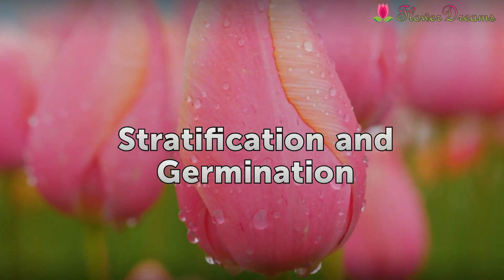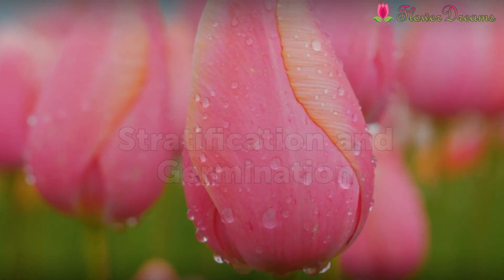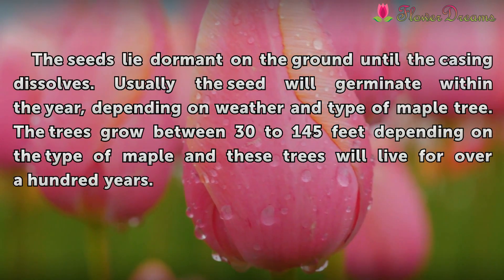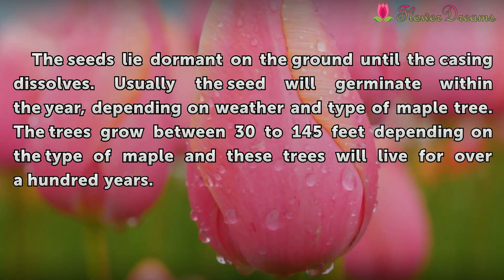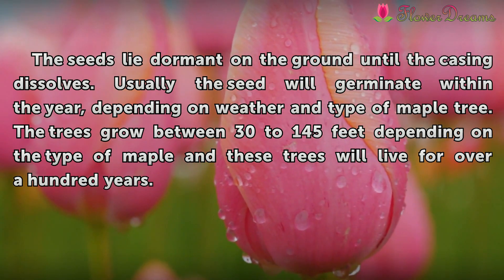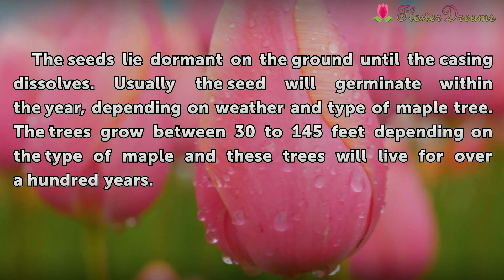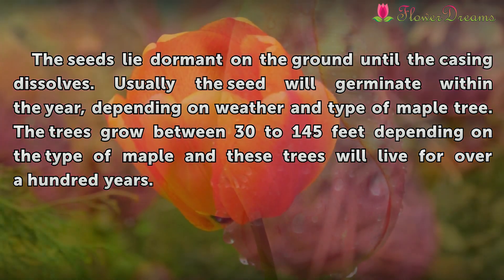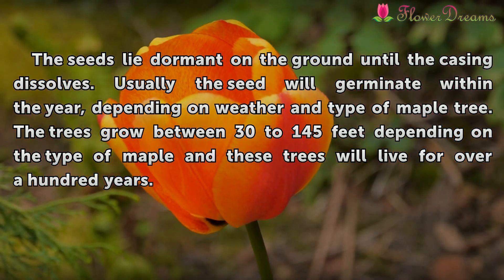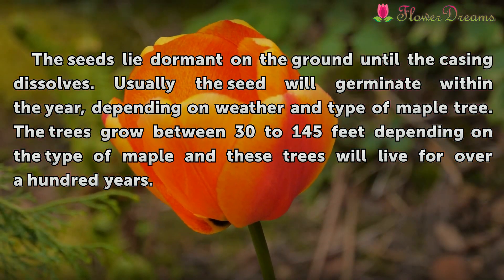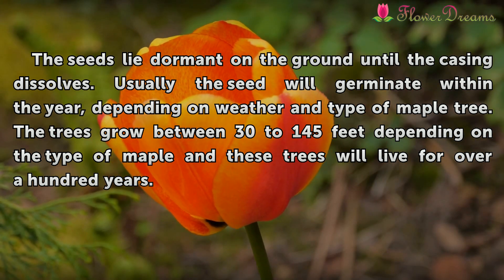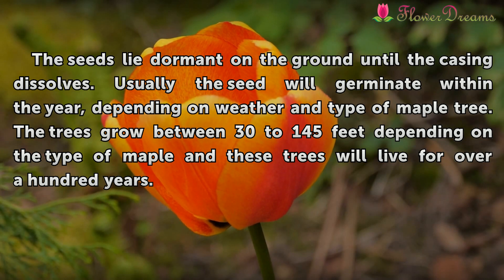Stratification and Germination. The seeds lie dormant on the ground until the casing dissolves. Usually the seed will germinate within the year, depending on weather and type of maple tree. The trees grow between 30 to 145 feet depending on the type of maple, and these trees will live for over a hundred years.